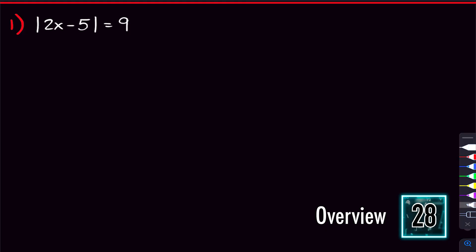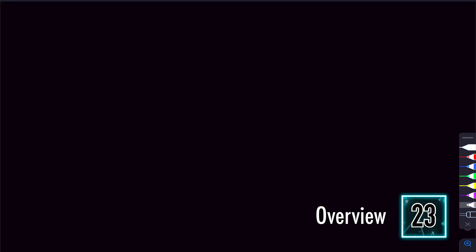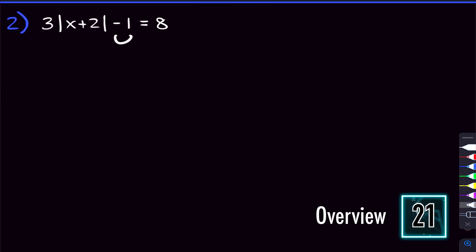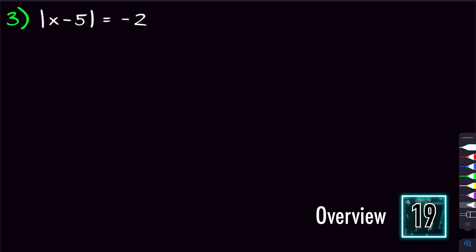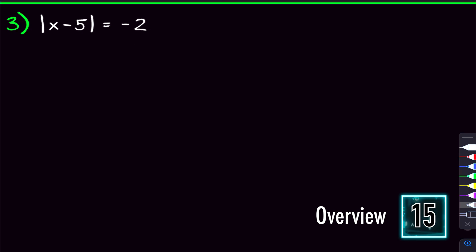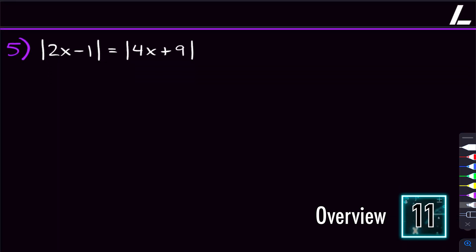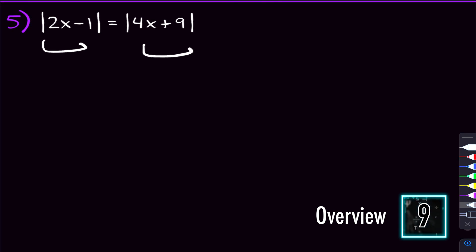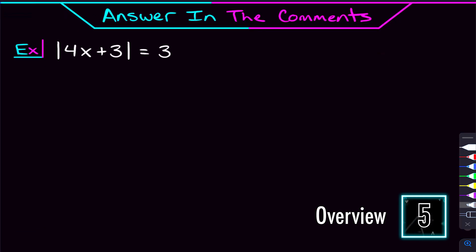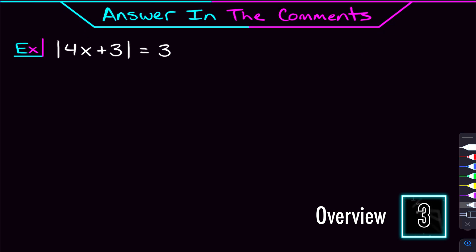We're going to be doing five problems in this video, and they'll be getting harder as we go. We'll start with an example where the absolute value is by itself, then move on to one where it isn't. We'll also talk about what happens when there's a negative on the right-hand side, what happens when there are x's on the right-hand side, and even when there are two absolute values equal to each other. Then I'll give you a problem to try and answer in the comments, and after watching this video, you should have no issue with it at all.